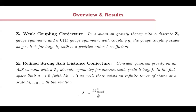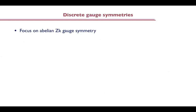So these are the results. Let's see how we get to them, under what circumstances they can be more rigorously motivated or derived, and what kind of tests we have for them. I'll focus on abelian Z_K gauge symmetries. There may be extensions for non-abelian groups, but these are harder to discuss, so I will start with the abelian ones.